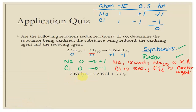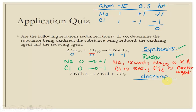Now let's do the next one. We have potassium chlorate going to potassium chloride and oxygen. One reactant, two products — so this is decomposition. There's no acid or base, so it can't be acid-base. It's not precipitation. There is oxygen produced here, so this is a gas-evolving reaction. Let's see if it's also redox by looking at oxidation numbers.